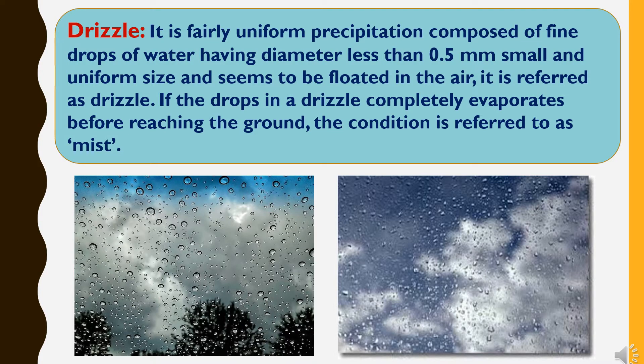Drizzle is fairly uniform precipitation composed of fine drops of water having a diameter less than 0.5 mm. These small, uniform drops seem to float in the air and are referred to as drizzle. If the drops in a drizzle completely evaporate before reaching the ground, the condition is referred to as mist.